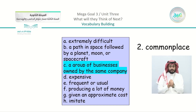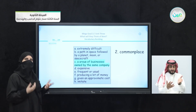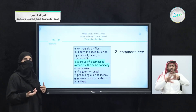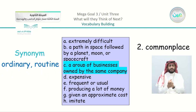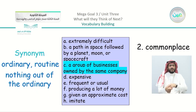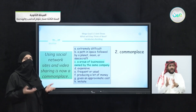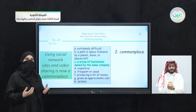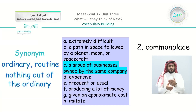The second word is 'commonplace.' Think about it by dividing it into two parts: 'common' and 'place.' When something is common, it is well known and usual. The synonym can be something ordinary or a routine — nothing out of the ordinary. For example, using social network sites and video sharing is now commonplace. It is an adjective describing that something is normal. So the meaning of commonplace is: frequent or usual.